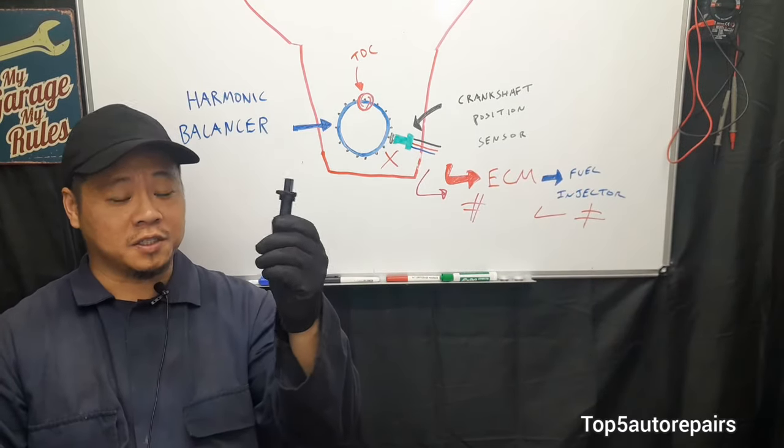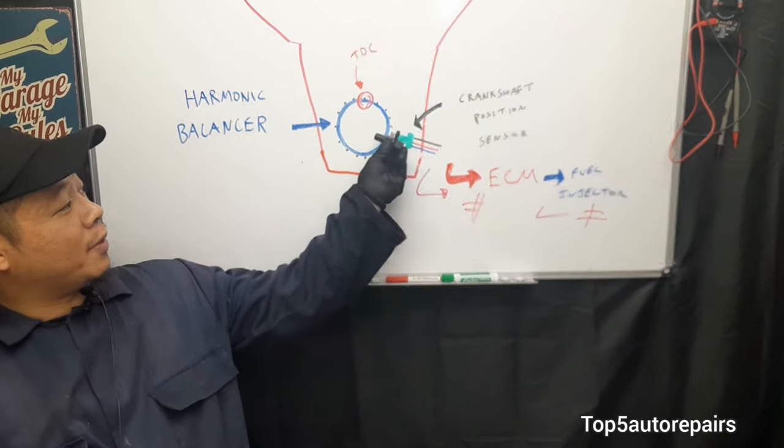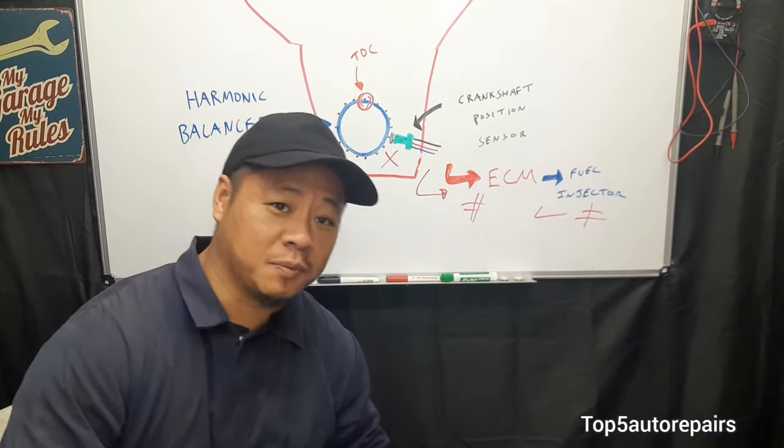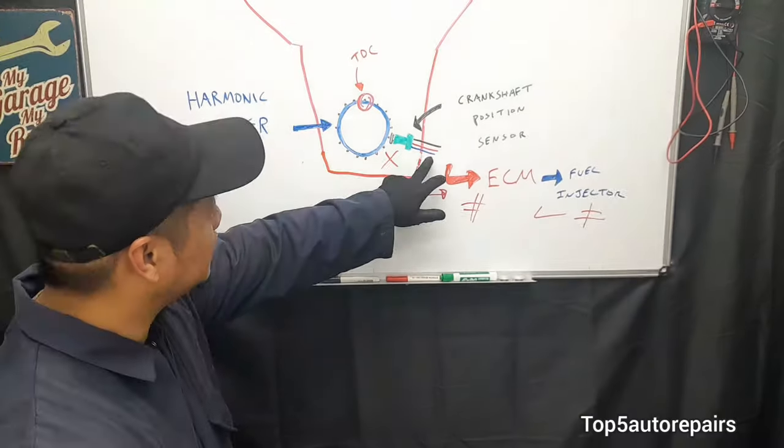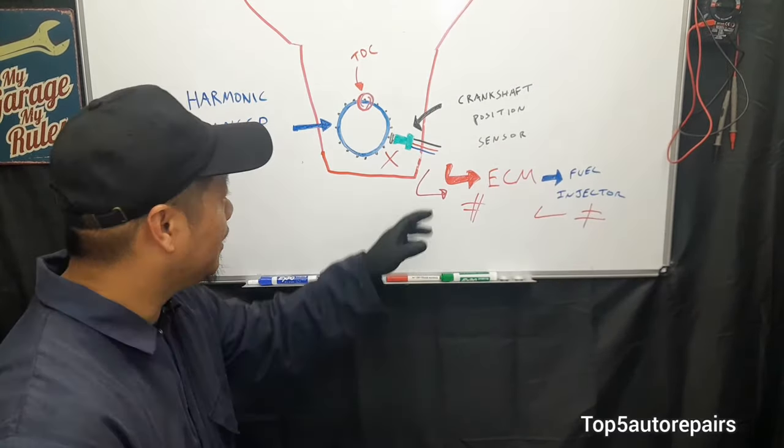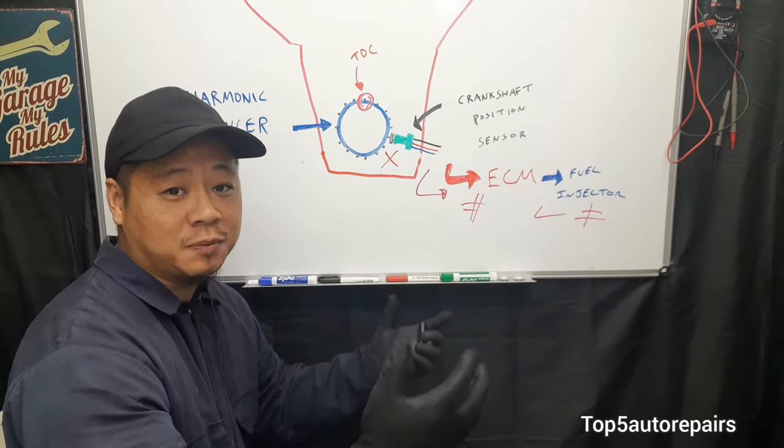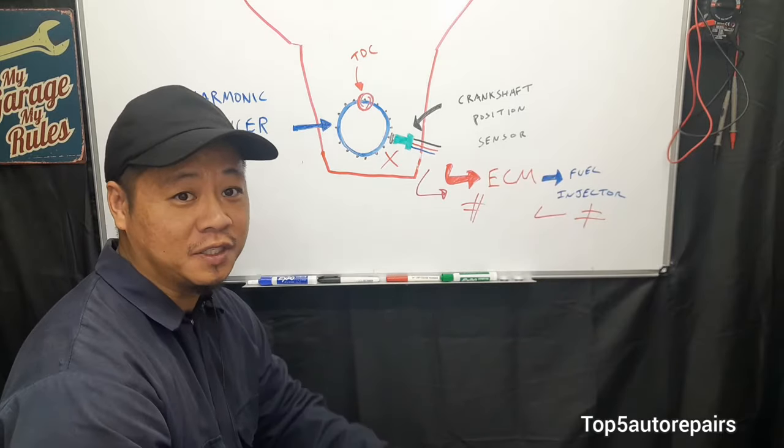The second common cause is the wire. Usually the crankshaft position sensor is mounted on the harmonic balancer and is always exposed to engine heat. What happens to these wires is they start to crack and break and become open. Sometimes when it's open, these two wires that are exposed can touch each other and short out the signal.